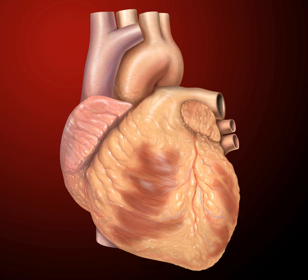There is an ear-shaped structure in the upper right atrium called the right atrial appendage, or auricle, and another in the upper left atrium, the left atrial appendage. The right atrium and the right ventricle together are sometimes referred to as the right heart. Similarly, the left atrium and the left ventricle together are sometimes referred to as the left heart.